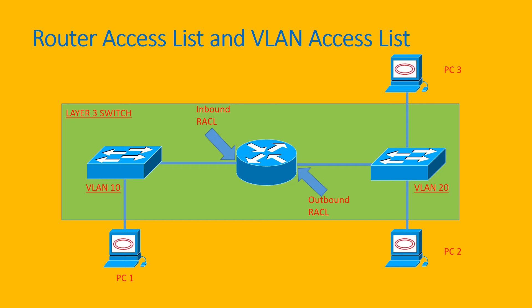Let's look at this diagram. You can imagine it as a network with a router connected to different subnets, or you can also imagine it as a layer 3 switch configured with two VLANs — VLAN 10 and VLAN 20. Let's see how the RACL works.